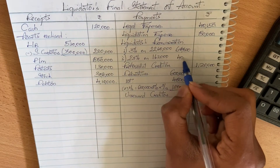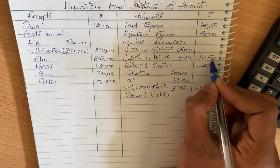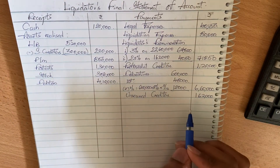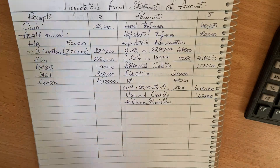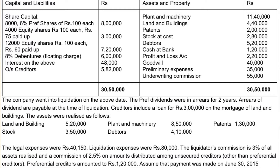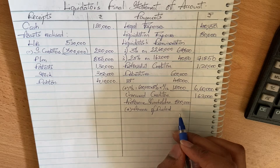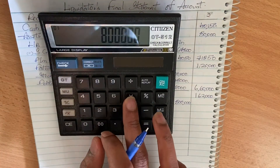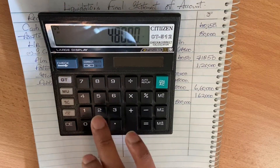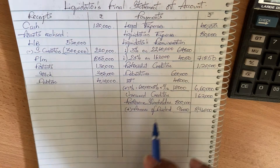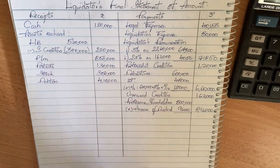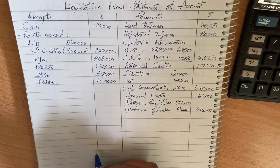Next we pay shareholders. First, preference shareholders — we pay their capital. Balance sheet shows eight lakhs share capital. Next, arrears of dividend from additional information must also be paid — two years. So eight lakhs share capital at six percent for two years: forty-eight thousand into two years is ninety-six thousand. So share capital plus dividend arrears: eight lakhs ninety-six thousand to preference shareholders.